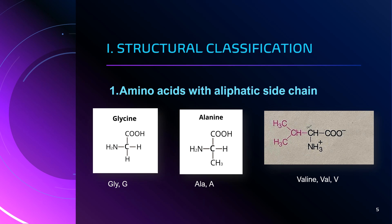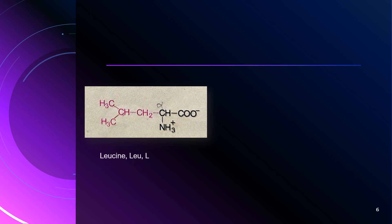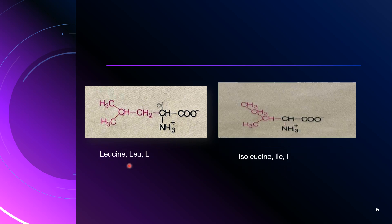Amino acids with aliphatic side chain also include two more amino acids: leucine and isoleucine. Leucine's three-letter code is LEU and single-letter code is capital L. The difference between leucine and isoleucine is just the rearrangement of the groups in the R group. Isoleucine is represented as ILE in three-letter code. The alpha carbon has the carboxylic group and amino group attached, and the R group represents the remaining structure.